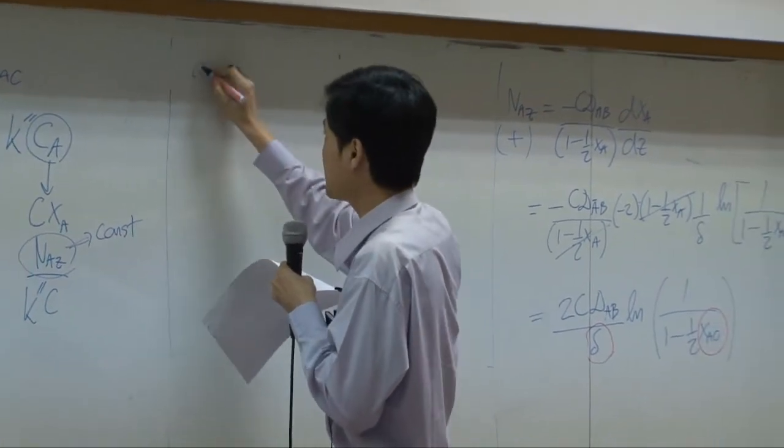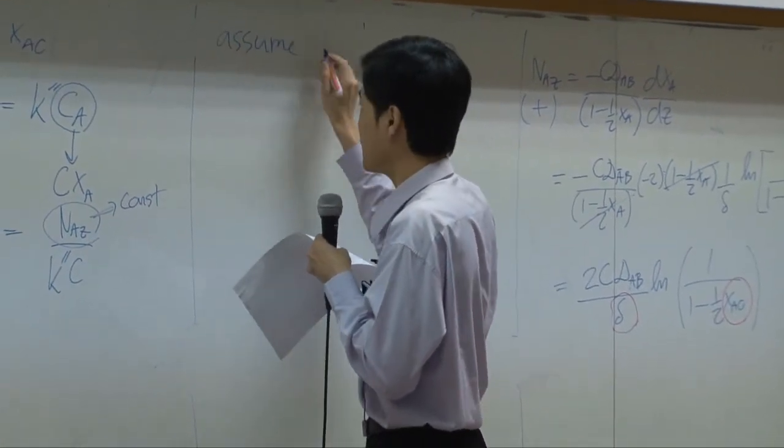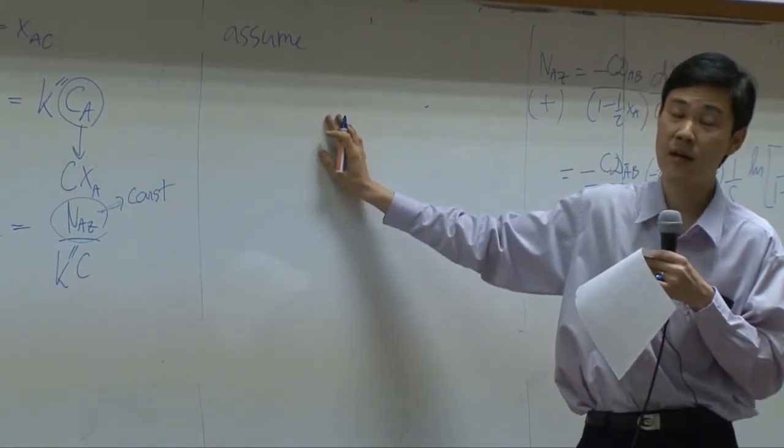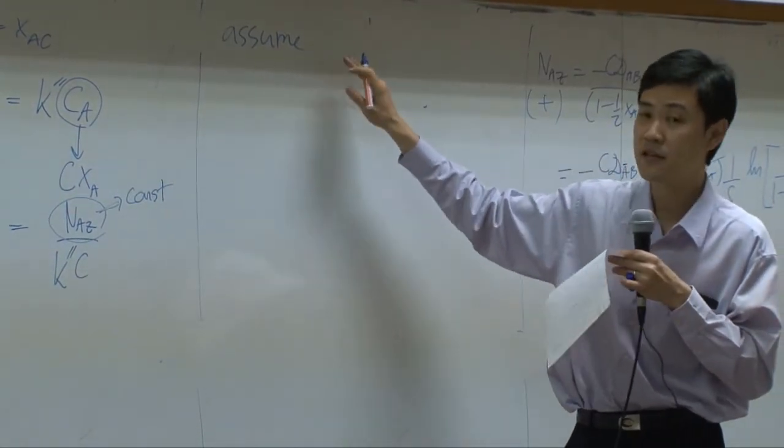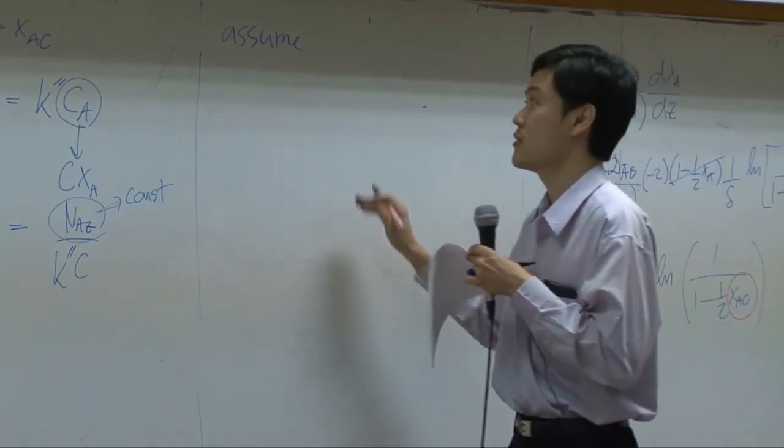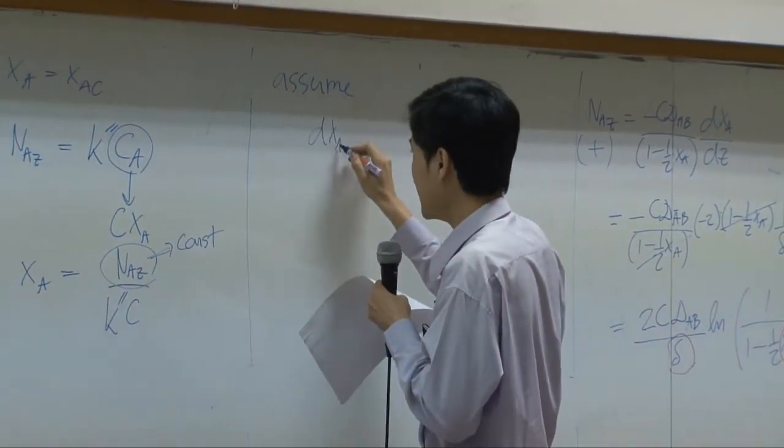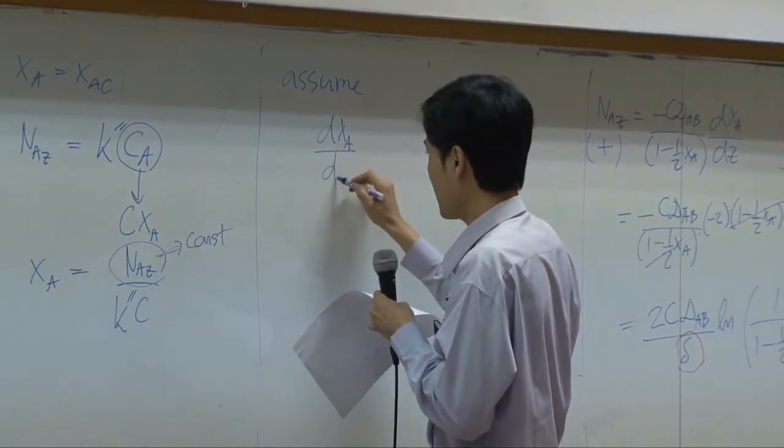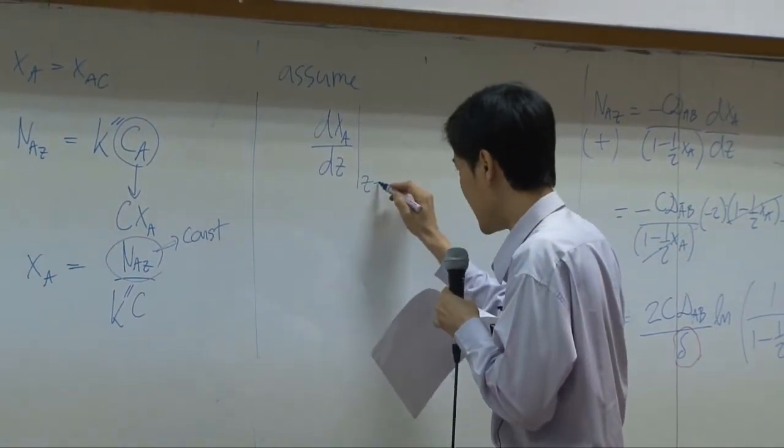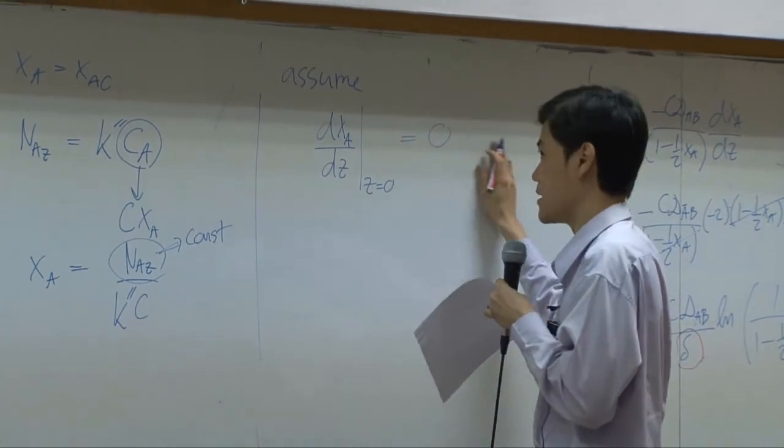You can assume - now the following boundaries here is not absolutely right, it is based on assumption - you may assume d(xa)/dz as z equals zero becomes zero.